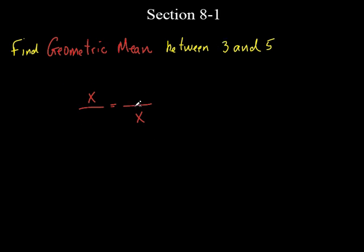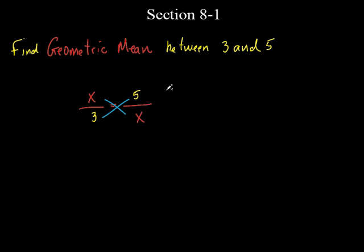So what do we do? We cross-multiply, exactly. x times x is x squared — not 2x, because x times x is x squared. And 3 times 5 gives us x squared equals 15. Is 15 the answer? No — we've got to get x by itself. We get rid of the square by taking the square root of both sides, so x equals the square root of 15.